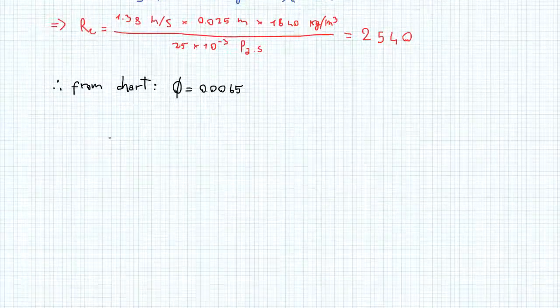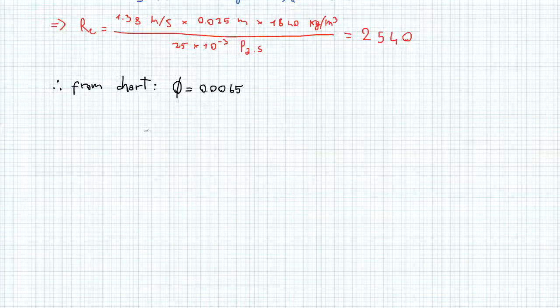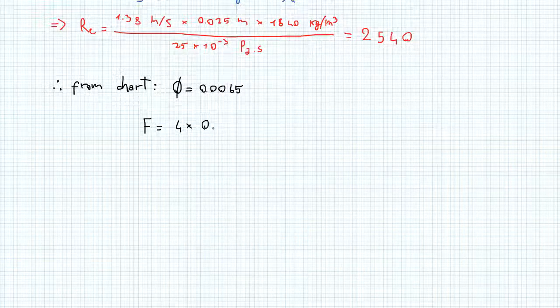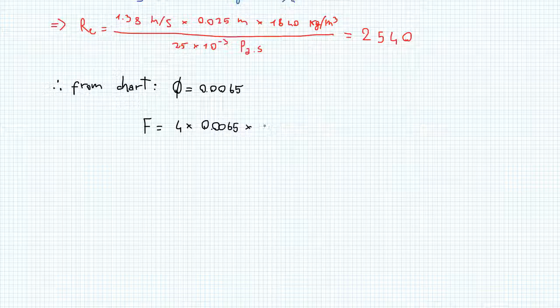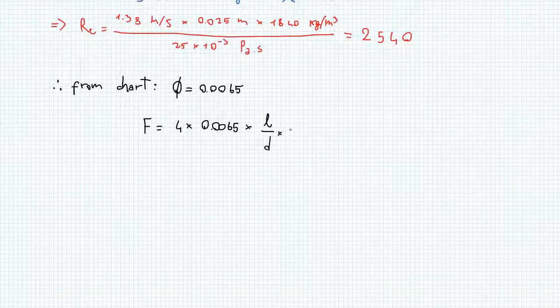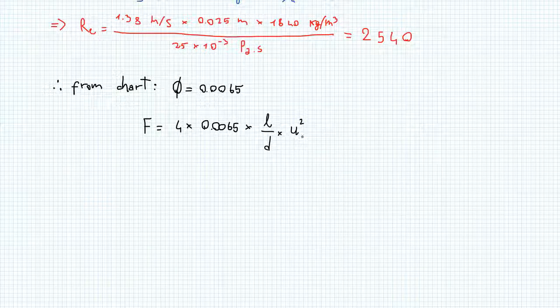This means that F, which we already defined as 4 times phi times l over d times u squared, is now 4 times 0.0065 times the length over the diameter of the pipe times u squared, the velocity of the fluid, in this case u1.